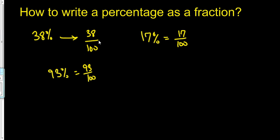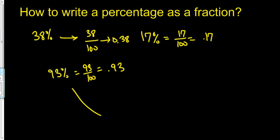You can simplify these fractions or just divide the top number by the bottom number. That gives you 0.38, 0.17, or 0.93. You can see the relationship starting to form between percentages, fractions, and decimals.